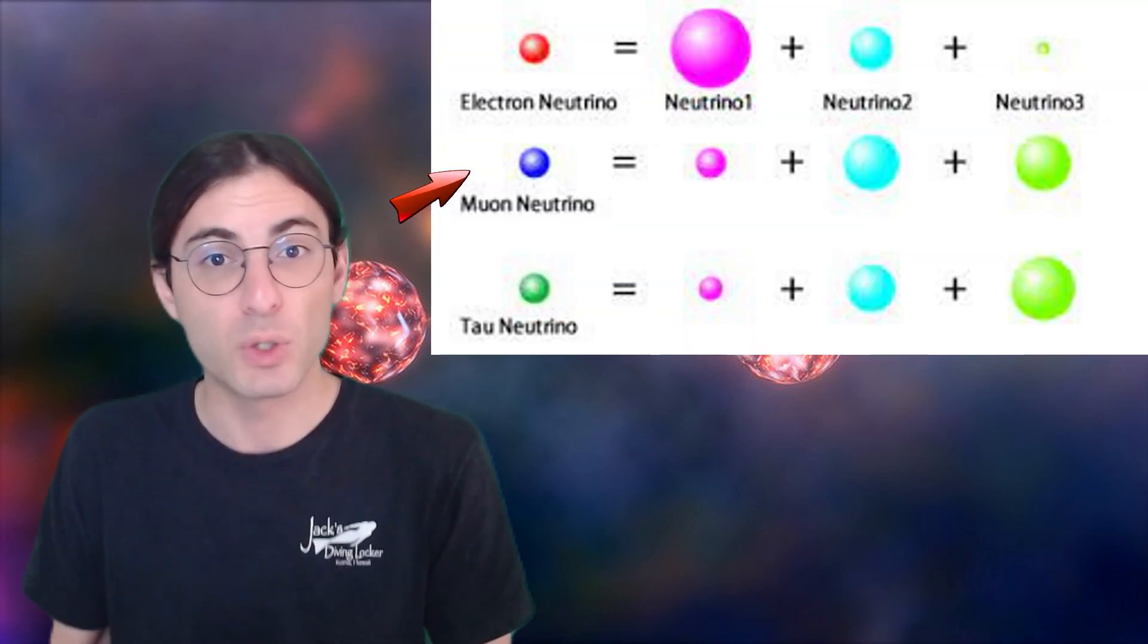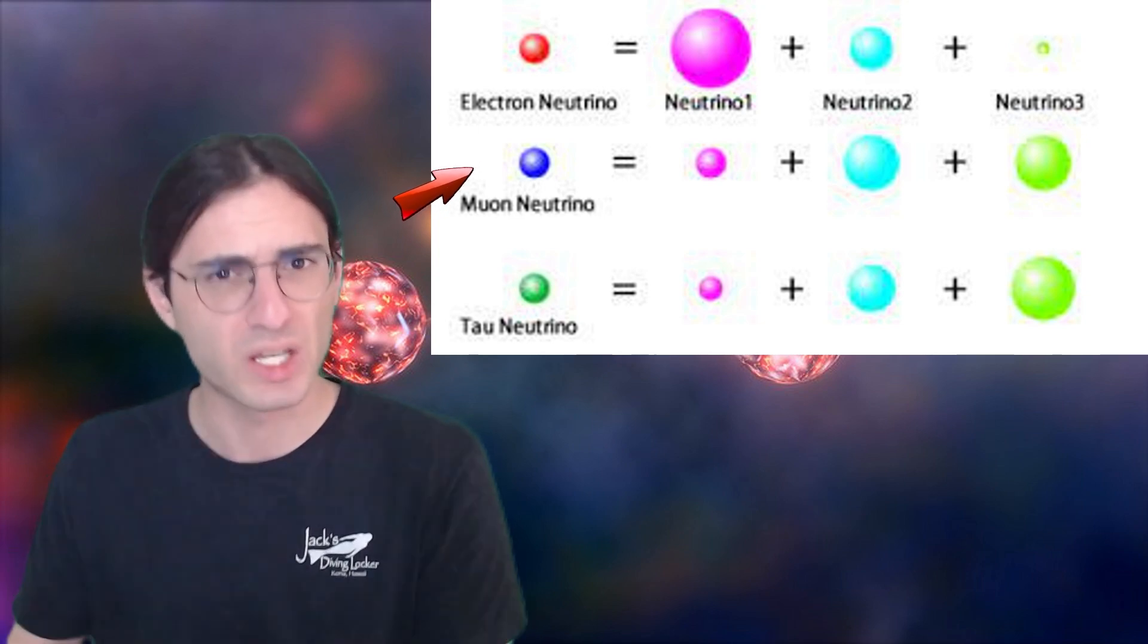There's the type of neutrinos that propagate in a fixed way, and there's the type of neutrinos that interact with the weak force in a fixed way. And experiments can verify that these two types aren't the same. Rather, a muon-type neutrino, which is associated with the weak interaction, can also be viewed as a superposition of the three different mass-type neutrinos.